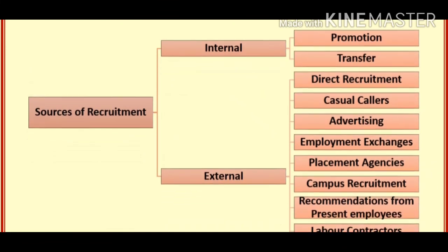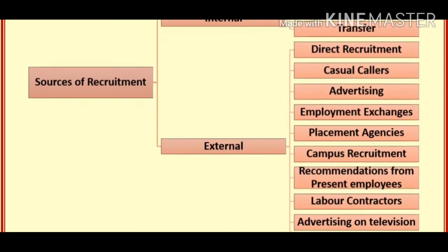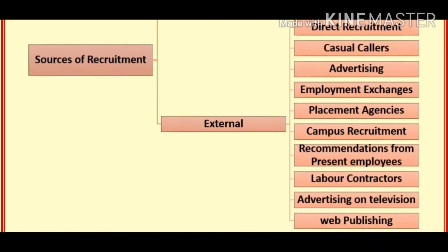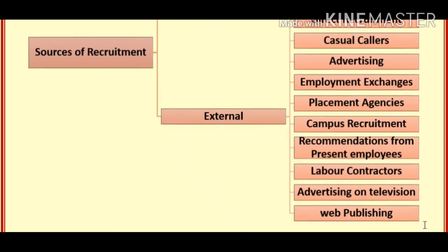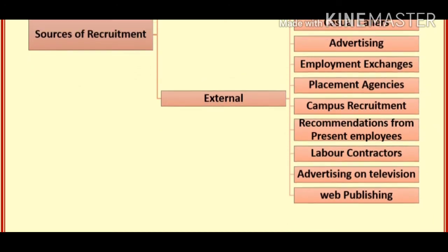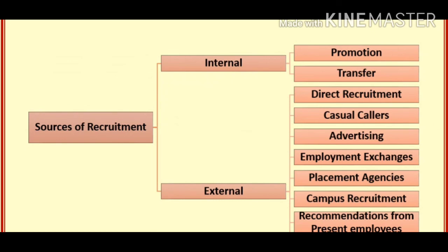To sum up, sources of recruitment are of two types: internal and external. Internal sources include two methods — promotion and transfer. External sources include a total of 10 methods: direct recruitment, casual callers, advertising, employment exchange (run by government), placement agencies (run by private sector), campus recruitment for MBAs and engineers, recommendations from present employees, labour contractors especially in construction work, advertising on television, and web publishing. This is all about the sources of recruitment. In the next module, we will study about the selection process. Good day to all of you, take very good care of yourself.